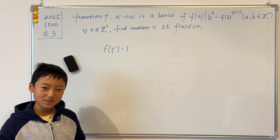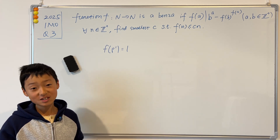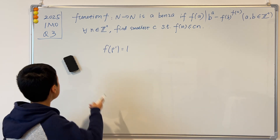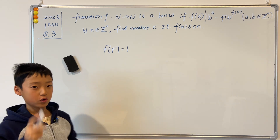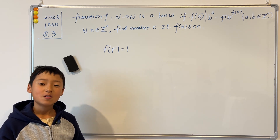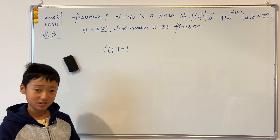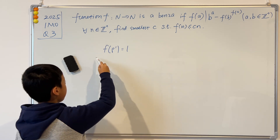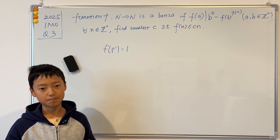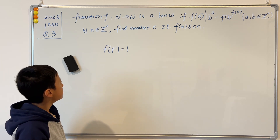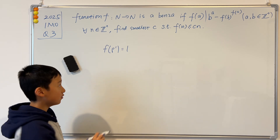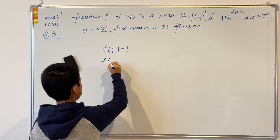Hi guys, welcome back to another video. Today I have part three, the last part, of solving the 2025 IMO Question 3. In the last part we solved that f(p') = 1 for an arbitrary odd prime p'. Now we want to find out what f(n) is.